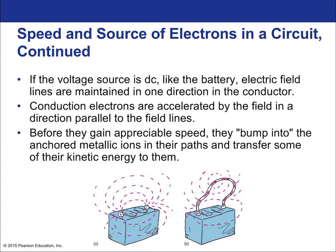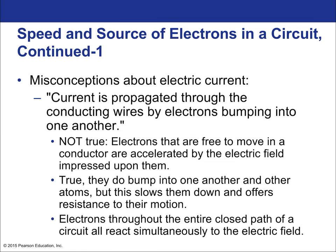If the voltage source is DC, like a battery, the electric field lines are maintained in one direction in the conductor. The conducting electrons are accelerated by the field in the direction parallel to the field lines but opposite. Before they gain appreciable speed, they bump into anchored metallic ions in the path, and that transforms some of their kinetic energy into heat.